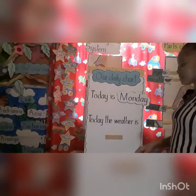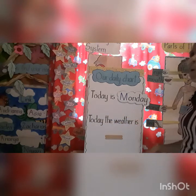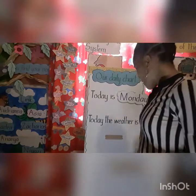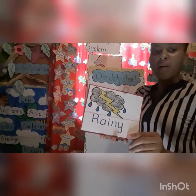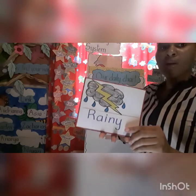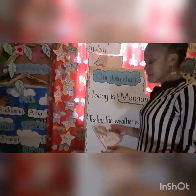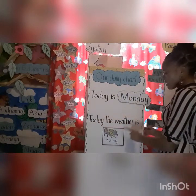Let's take a look at the second sentence: today the weather is. What type of weather are we having today, boys and girls? I want you to stand and take a look outside. Is it sunny? Is it cloudy? Is it windy? Or is it rainy? Very good. Today the weather is rainy. And remember, if you have a different type of weather where you live, you can tell your mom and dad at home. So our second sentence will now read: today the weather is rainy.